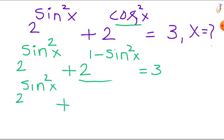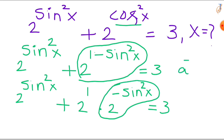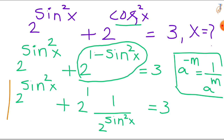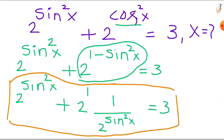Now, 2 raised to the power of (1 minus sin²x) can be written as 2 raised to the power of 1 times 2 raised to the power of minus sin²x. Since 2 raised to the power of minus sin²x is in the form a to the power of minus m, we can write it as 1 divided by a to the power m. So our equation becomes: 2 raised to the power of sin²x plus 2 divided by 2 raised to the power of sin²x, equals 3.